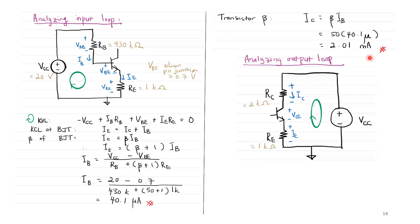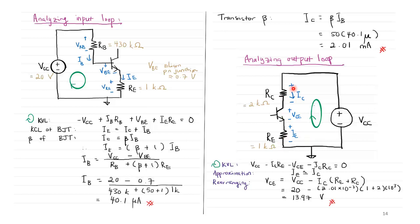Analyzing the output loop with KVL: VCC − IE·RE − VCE − IC·RC = 0. Rearranging and substituting VCC = 20 V, IC = 2.01 mA, RE = 1 kΩ, and RC = 2 kΩ gives VCE = 13.97 V.